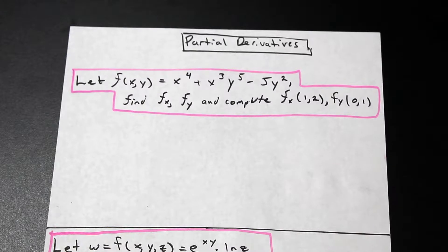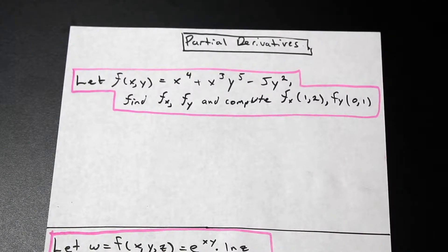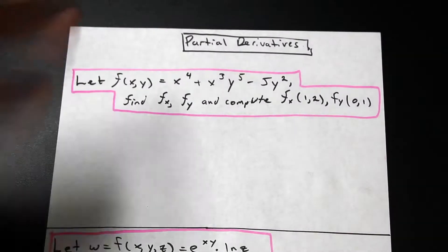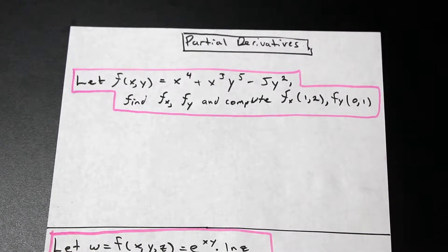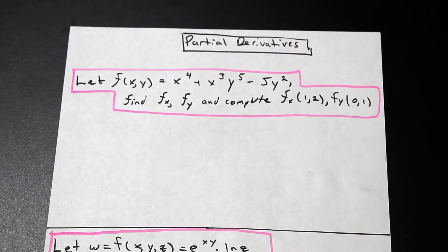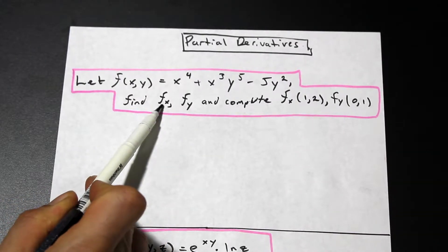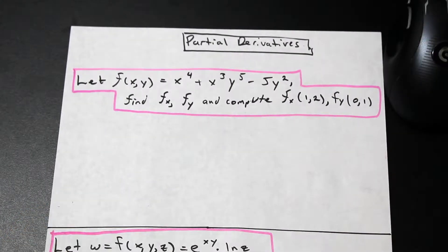We have a multivariable polynomial function here of x and y. It says: let f(x, y) equal x to the fourth plus x cubed... and so on. We need to find f sub x, f sub y, and compute f sub x at x equals 1 and y equals 2. A couple things to note: f sub x is the notation for the partial derivative of f with respect to x.